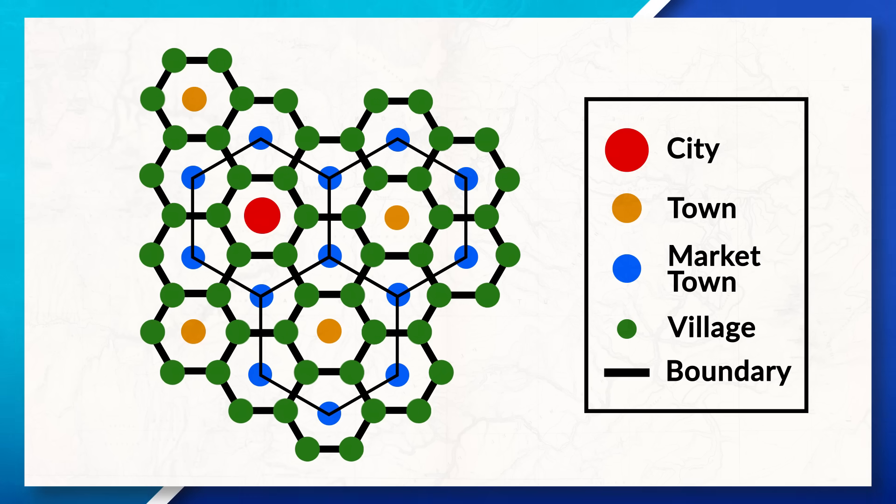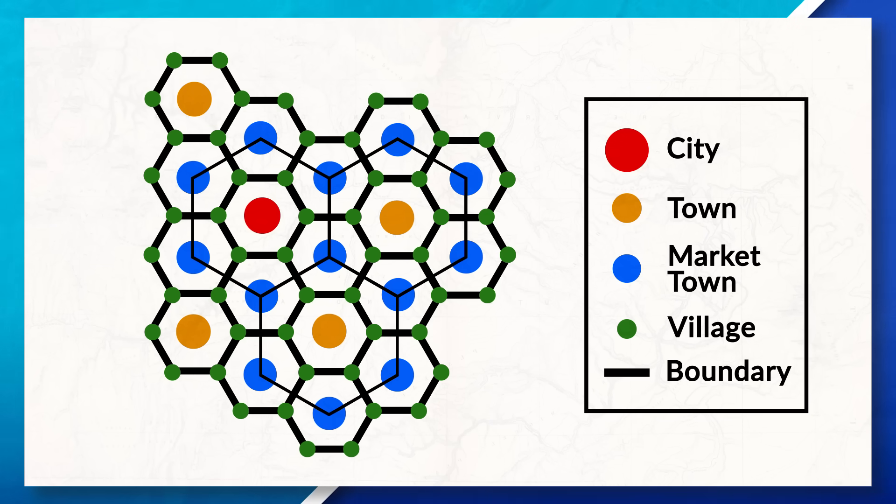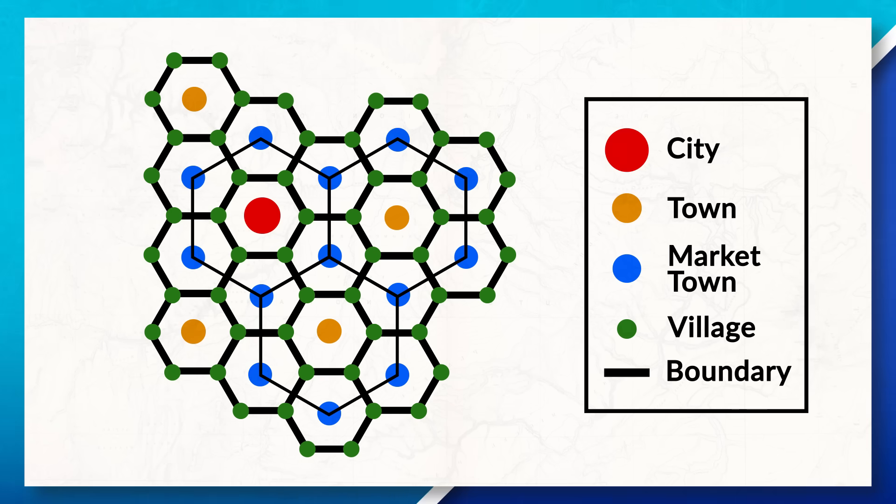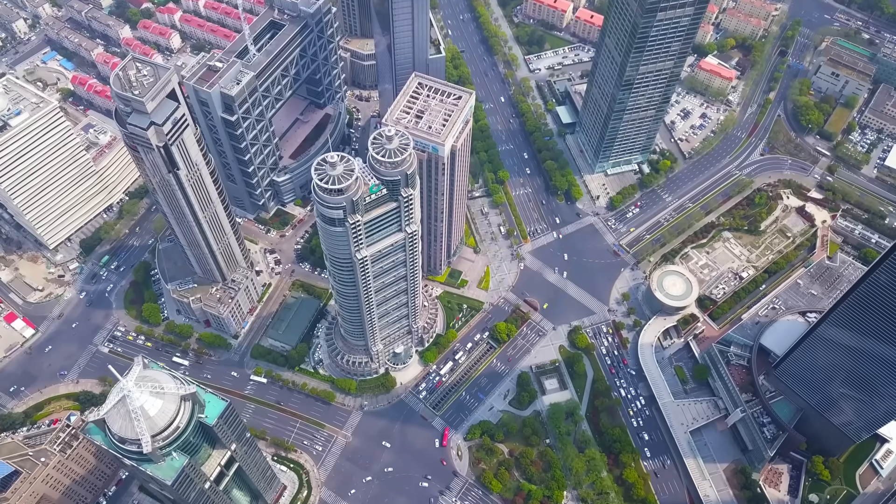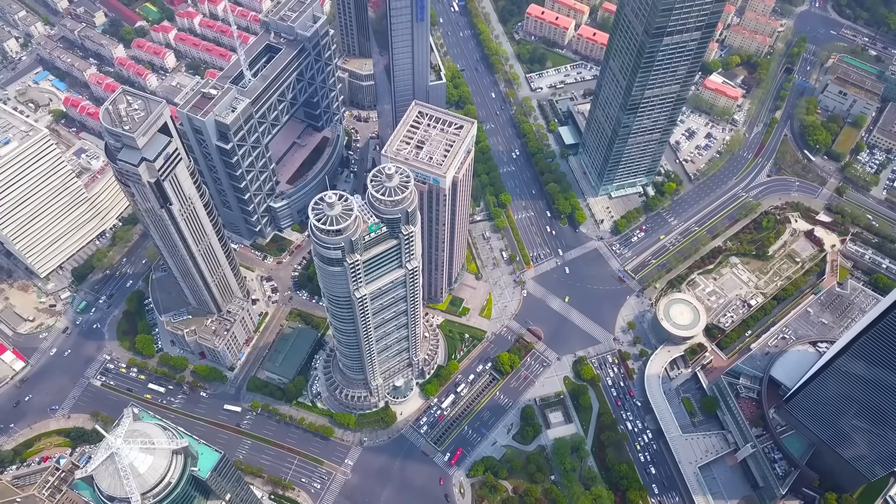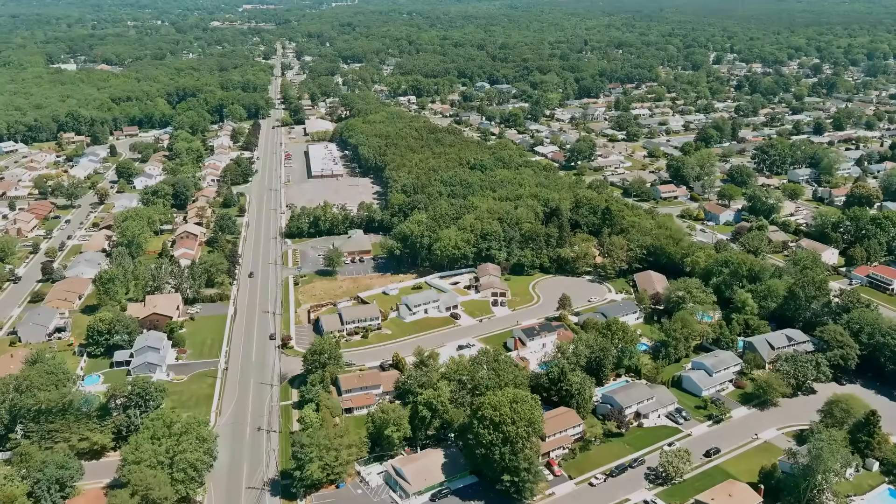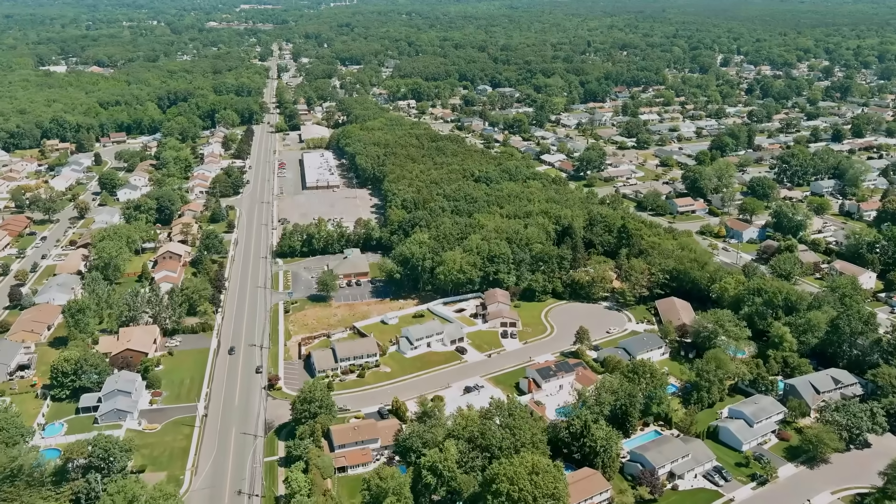We can see this in the central place theory when looking at the distribution of different settlements. Notice that villages, which are the smallest of the settlements, typically surround larger settlements. This allows the villages to have access to different goods and services that their residents need. The city will often have the largest variety of specialized services and have the most unique goods, while the other towns and market towns will have more general services and goods that people use on a daily basis. So we can see that the spatial layout of different cities often depends on the size of the settlements, which not only impacts the services that they end up offering but also the location of the different settlements.